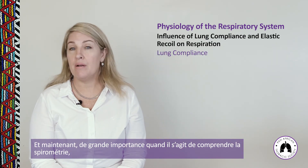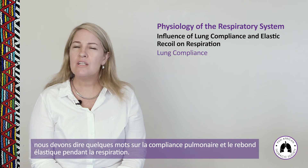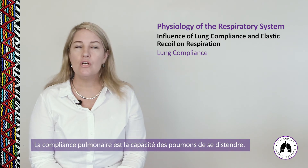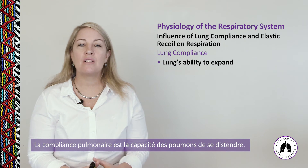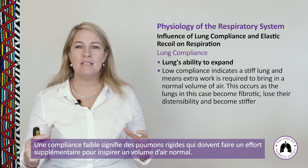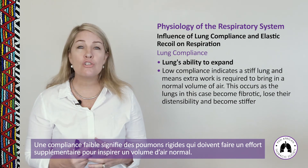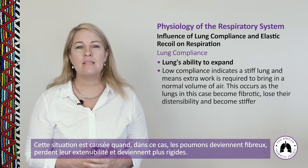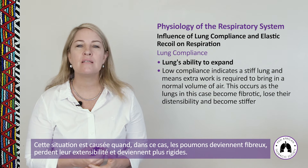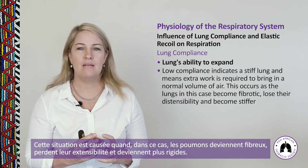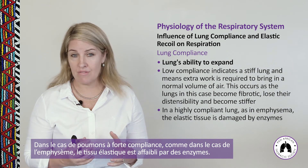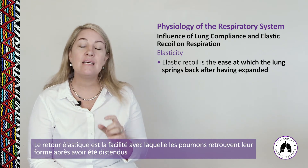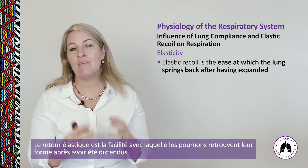When it comes to understanding spirometry, we need to consider lung compliance and elastic recoil. Lung compliance is the ability of the lungs to expand — low compliance indicates a stiff lung requiring extra work to bring in a normal volume of air, as occurs when the lungs become fibrotic and lose distensibility. In a highly compliant lung, as in emphysema, the elastic tissue is damaged by enzymes. Elastic recoil is the ease at which the lungs spring back after having been expanded.